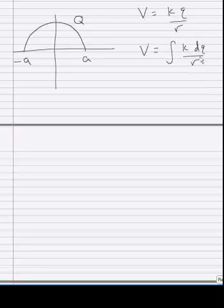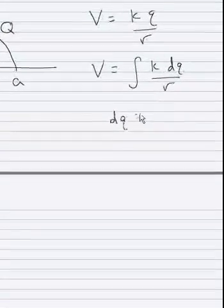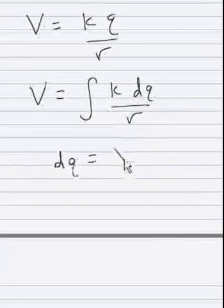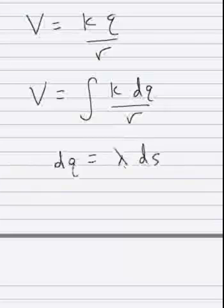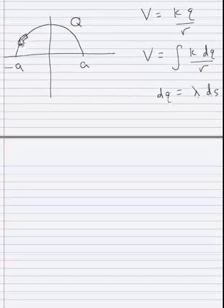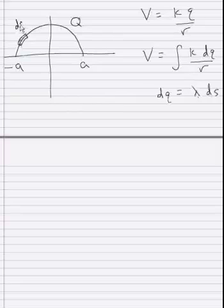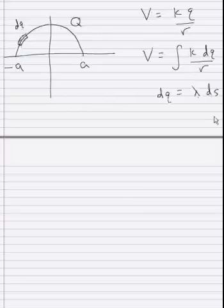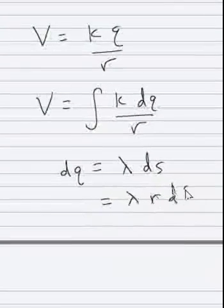So in this case our DQ is lambda DS. We're going to take some arbitrary DQ. And it's lambda times DS where DS is the arc length. And that's equal to lambda R D theta.